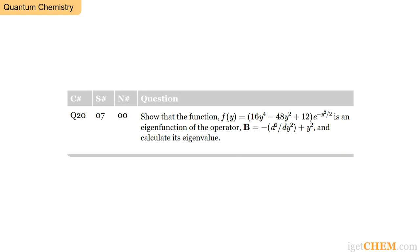Let me read through the problem. Show that the function f(y) equals (16y⁴ − 48y² + 12) times e to the minus y-squared over 2, is an eigenfunction of the operator B equals negative d-squared-dy-squared plus y-squared, and calculate its eigenvalue.